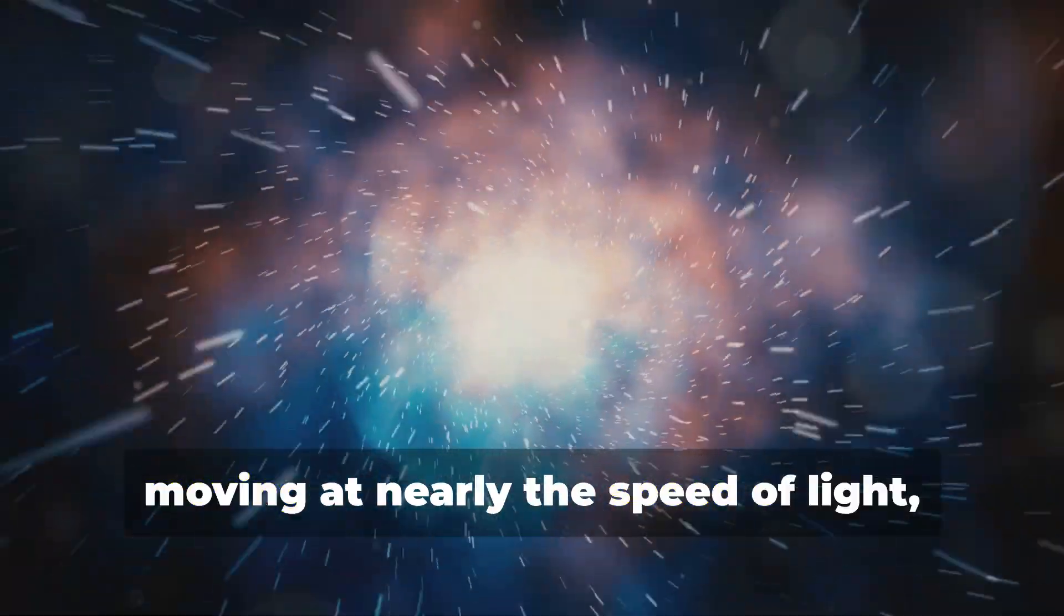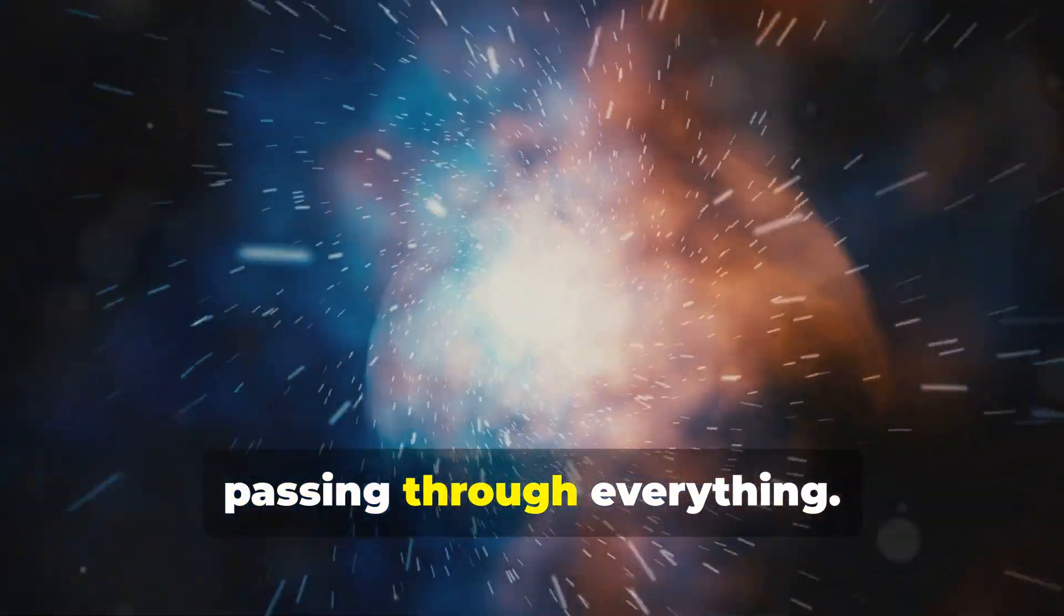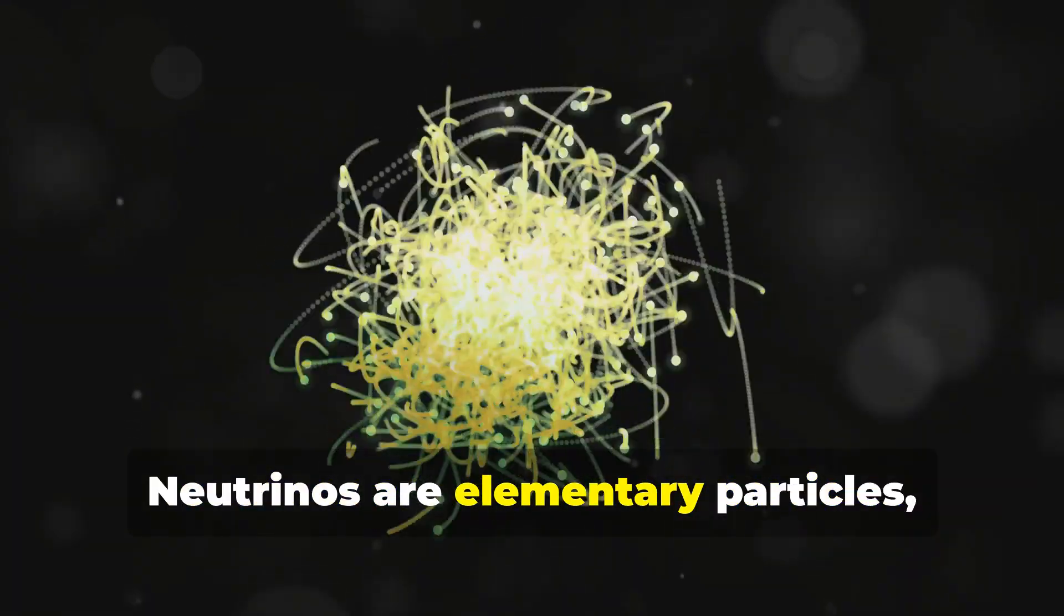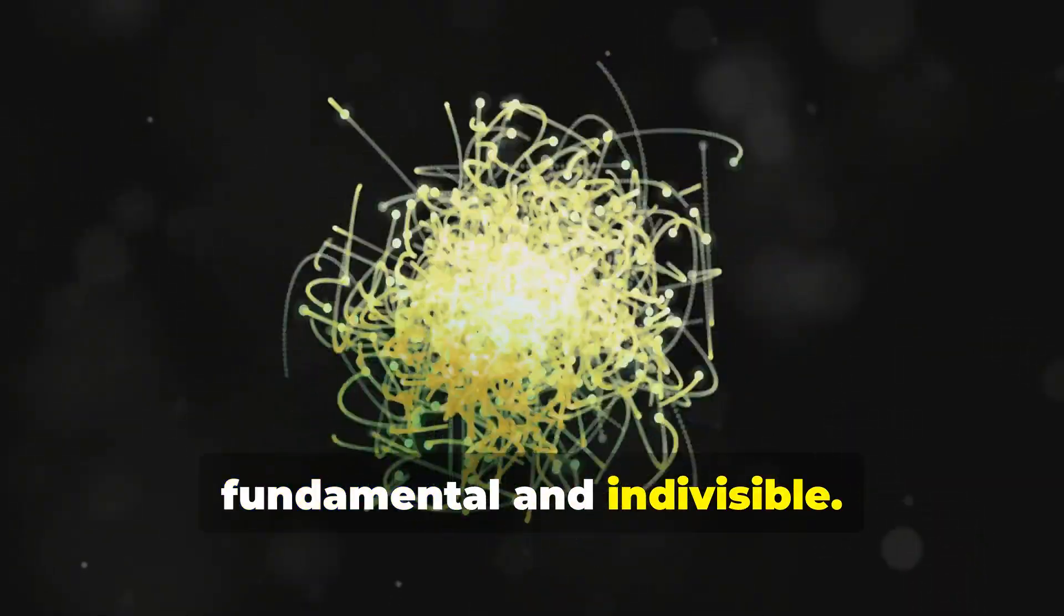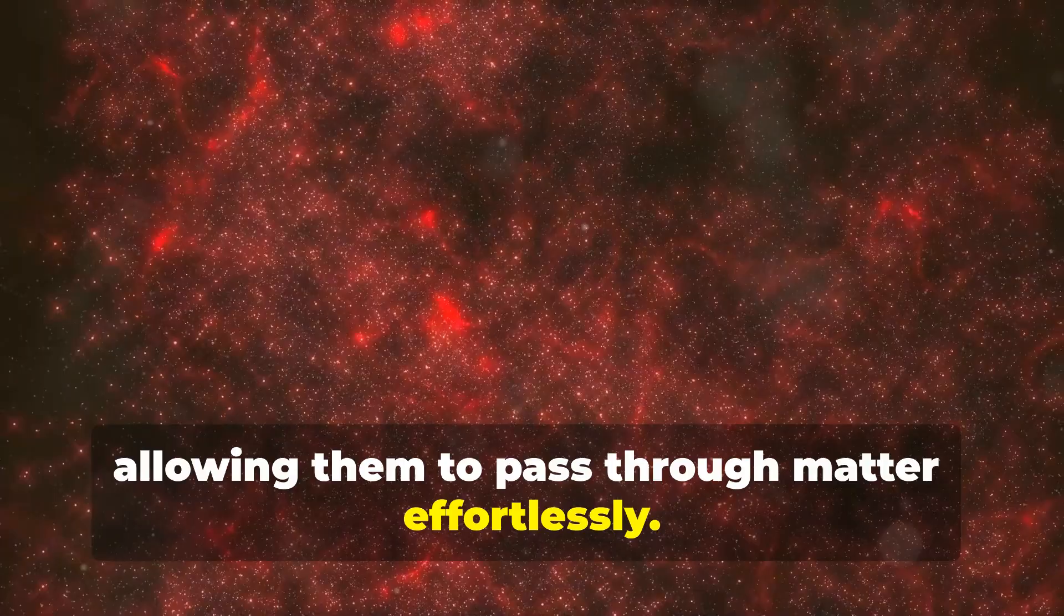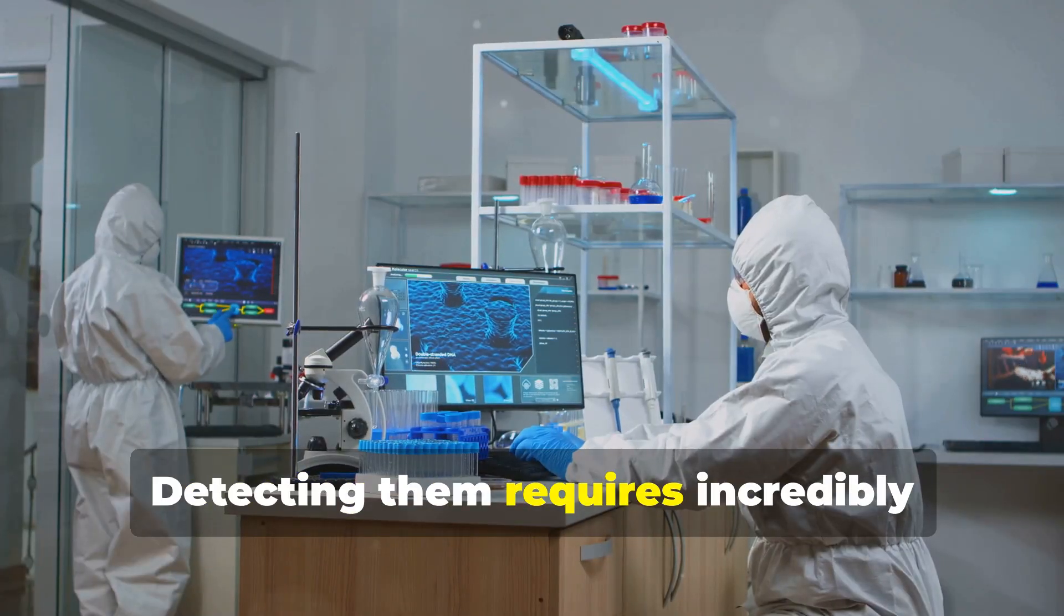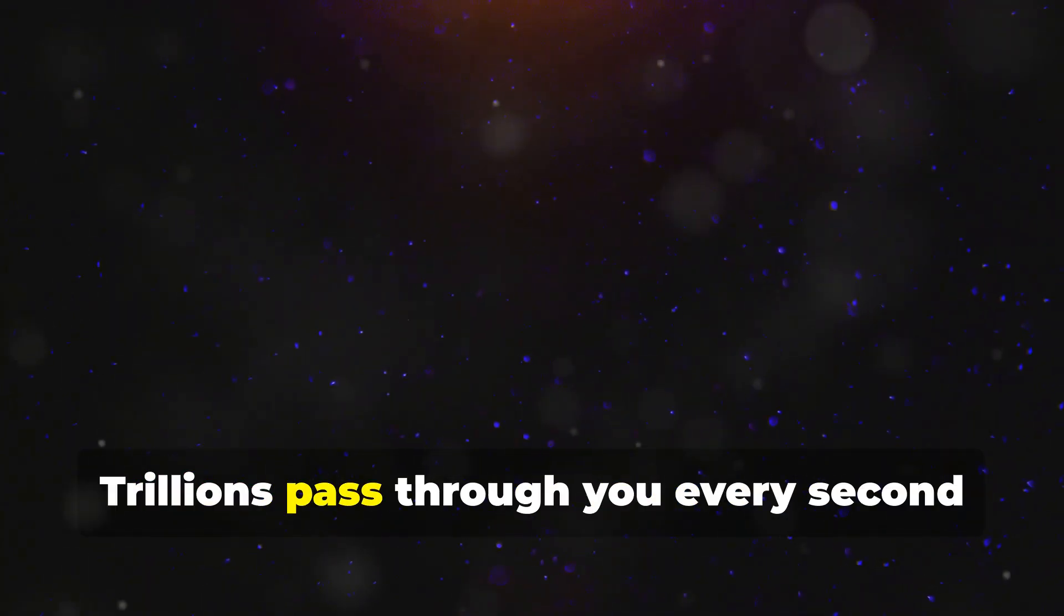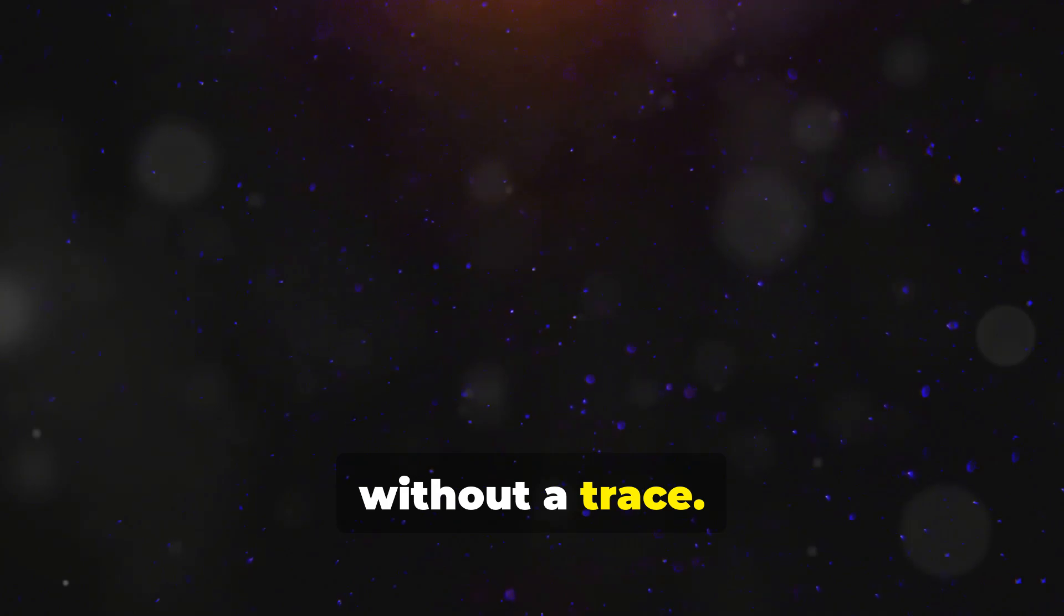They're like ghosts, moving at nearly the speed of light, passing through everything. Neutrinos are elementary particles, fundamental and indivisible. They have no electric charge, allowing them to pass through matter effortlessly. Detecting them requires incredibly sensitive equipment. Trillions pass through you every second without a trace.